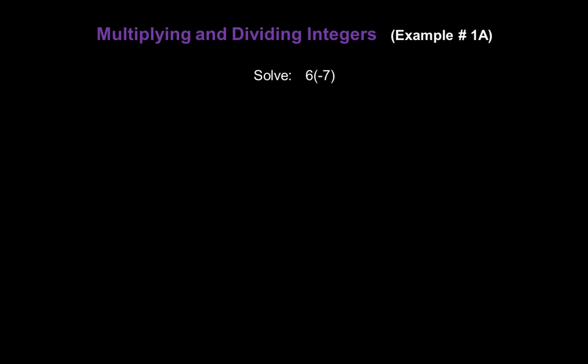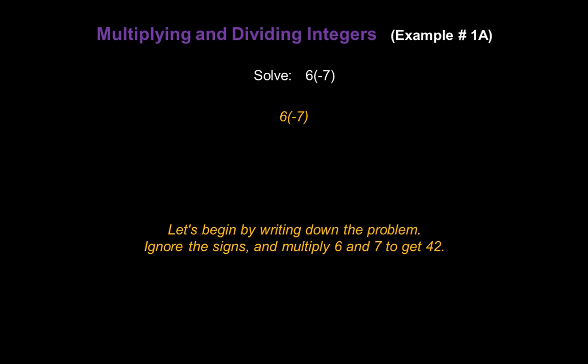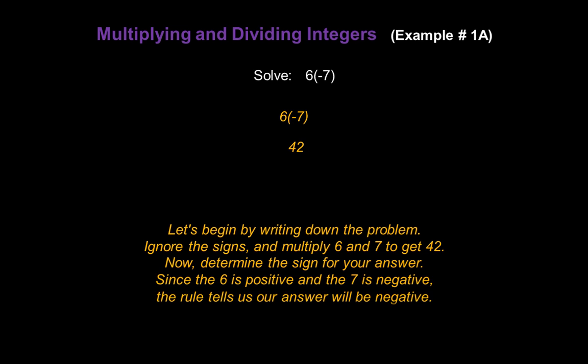Let's look at some examples. Let's solve 6 times negative 7. Ignore the signs to start and just multiply 6 and 7. We know that gives us 42. Now determine the sign on 42. Since the 6 is positive and the 7 is negative, the rule tells us our answer will be negative 42.